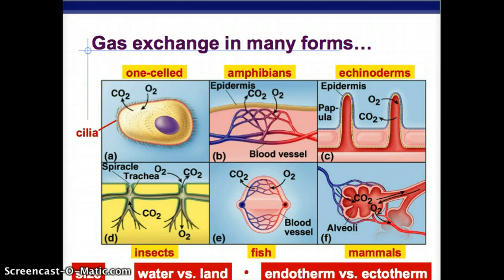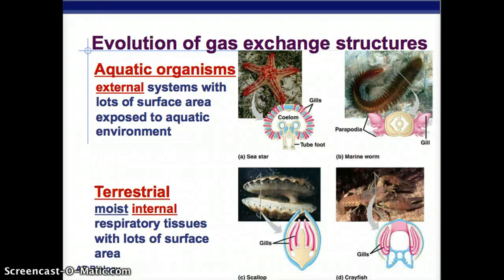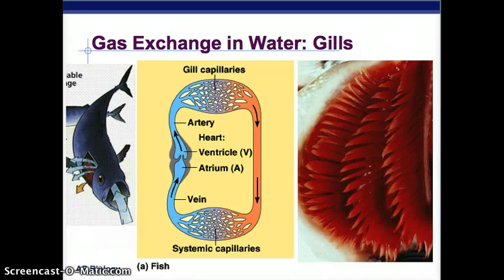Aquatic organisms have external respiratory systems with a lot of surface area, and since they're in water they don't have to worry about keeping it moist. Terrestrial organisms have a moist internal respiratory system with a lot of surface area. Both have lots of surface area, but for aquatic organisms it's on the outside and for terrestrial organisms it's on the inside.